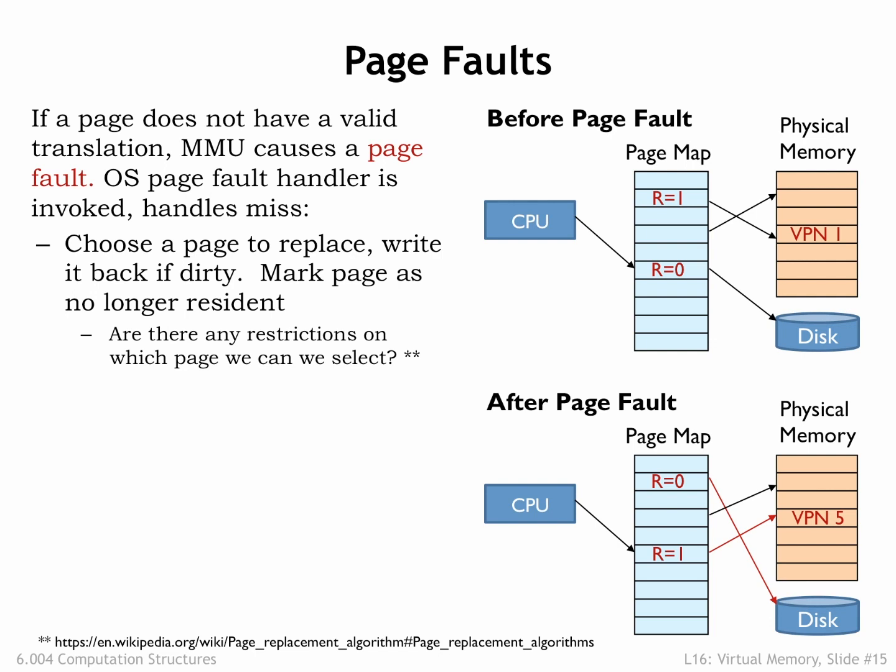In the figure, we see that the R bit for virtual page 1 has been set to zero. Now physical page 4 is available for reuse.